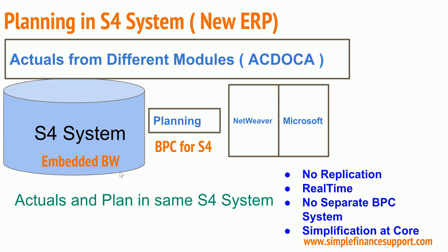Embedded BW is the key functionality for planning in S4. There is no separate BW system — the original BPC ran on a BW system, and now that BW is ported into embedded BW within S4 itself. You still have BW for heterogeneous system integration, but for the planning application within S4, embedded BW handles it. All planning functions — CCA planning, PCA planning, COPA planning — can now be done using embedded BW with BPC.